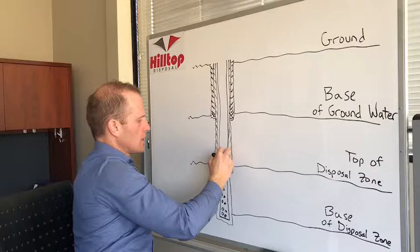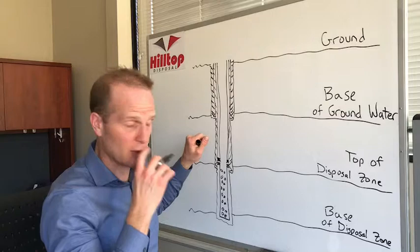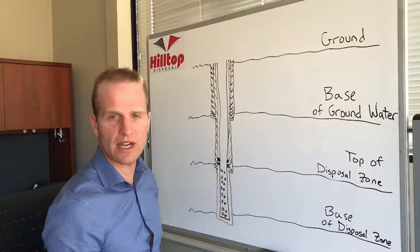So the reason why you run your injection string is to protect those casing strings. You can imagine if you didn't have your injection string in there and you had some corrosive water that corroded your casing at all, well if you get a hole in your casing you're kind of screwed and it'd be a real huge problem over time.